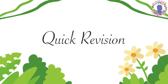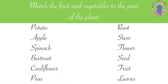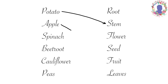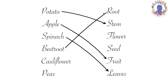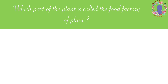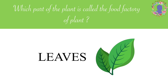Now let's do a quick revision of everything we have learned so far. Match the fruit and vegetables to the part of the plant. Potato is a stem. Apple is a fruit. Spinach are leaves. Beetroot is a root. Cauliflower is a flower. And peas are seed. Now tell me: which part of the plant is called the food factory of plant? Leaves. Leaves prepare the food for plants, so they are also called the kitchen or food factory of plant.